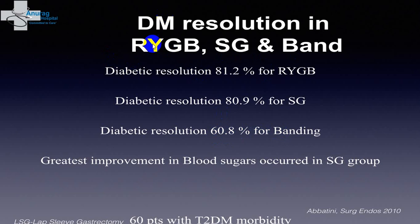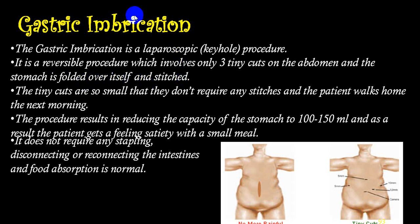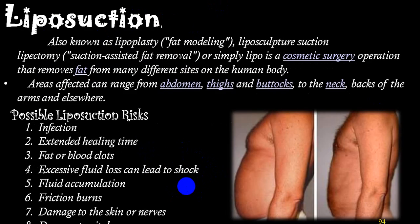Gastric imbrication is another procedure — a reversible laparoscopic technique requiring only three tiny cuts, where the stomach is folded over itself and stitched, reducing stomach capacity and food intake. Liposuction (lipoplasty or fat modeling) created many complications and has largely gone out of date. It was mainly cosmetic and carried risks of infection, extended healing time, fat and blood clots, excessive fluid loss, shock, friction burns, nerve damage, and damage to vital organs.